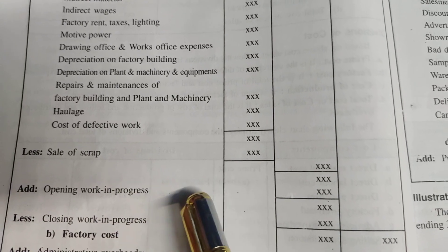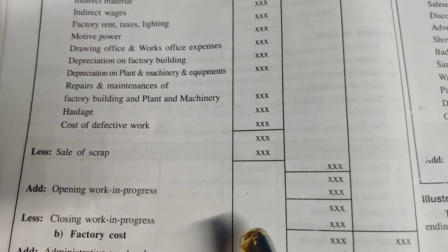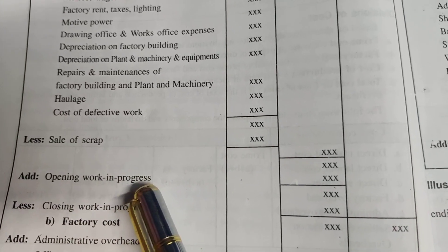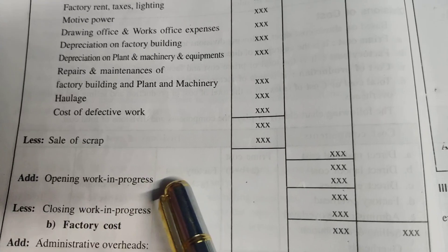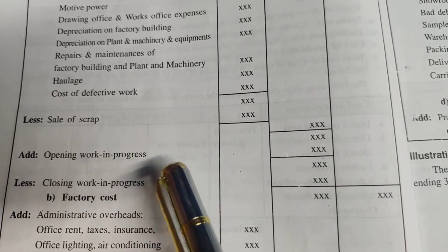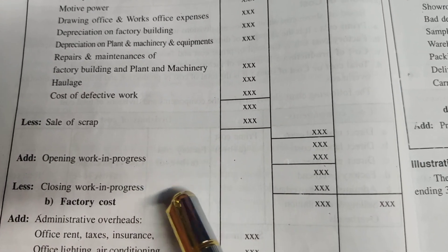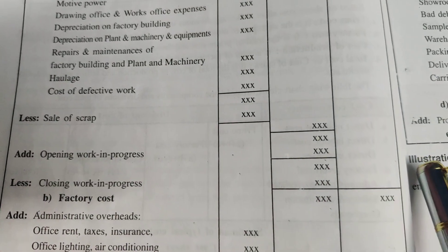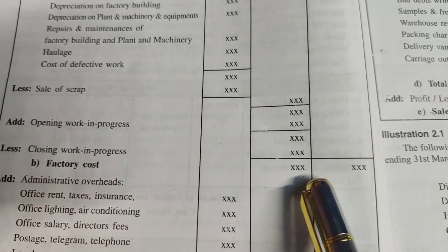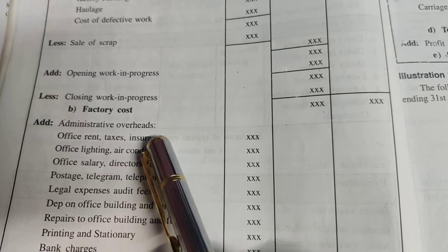Next, we add opening stock of work in progress. Work in progress means half-finished goods — they are not raw materials, but they are not finished stock either. That is why they are called work in progress. Opening stock of work in progress is added, and closing stock of work in progress is deducted. When we deduct the closing stock of work in progress, we get factory cost.